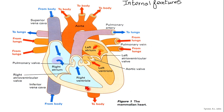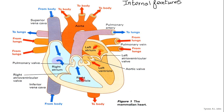This region here is still the aorta - it comes around the aortic arch and goes behind the heart. Inside the heart: this is the right atrium, that's the left atrium, this is the right ventricle, and that's the left ventricle. Most things are labelled, but there are a couple more labellings to add.